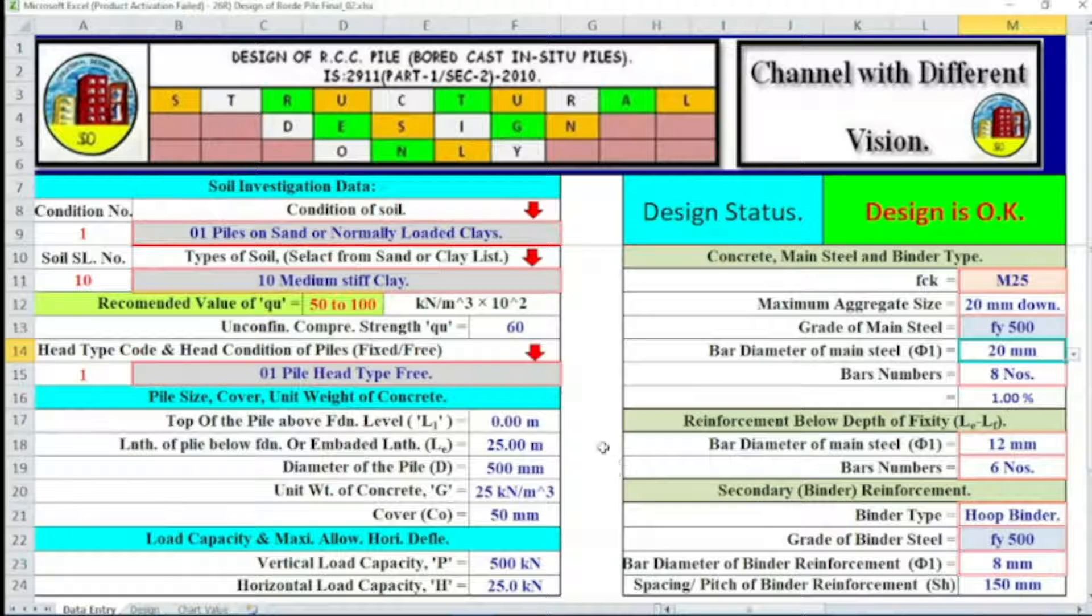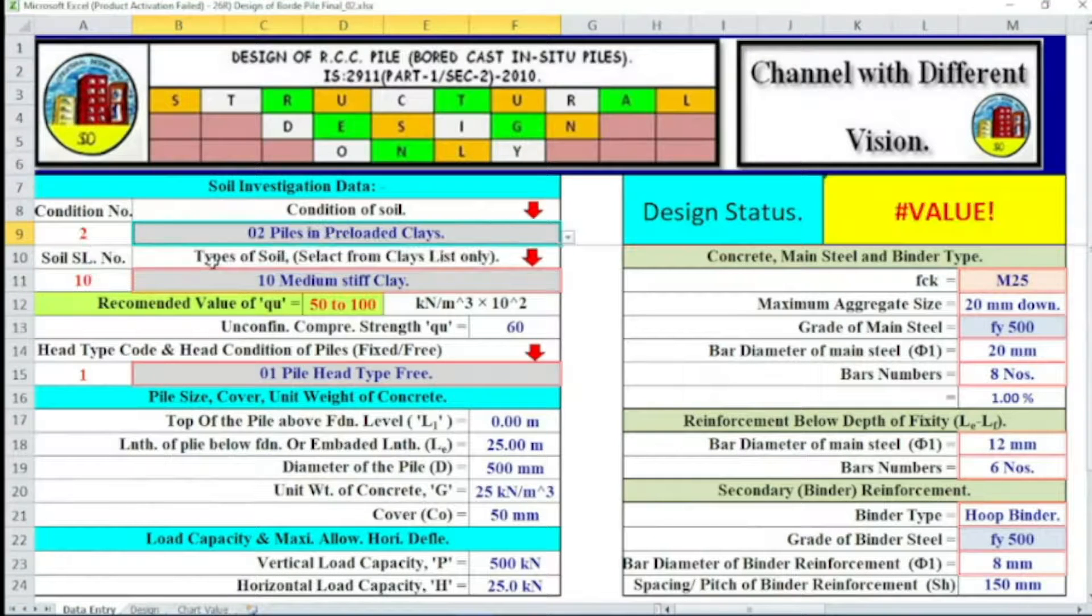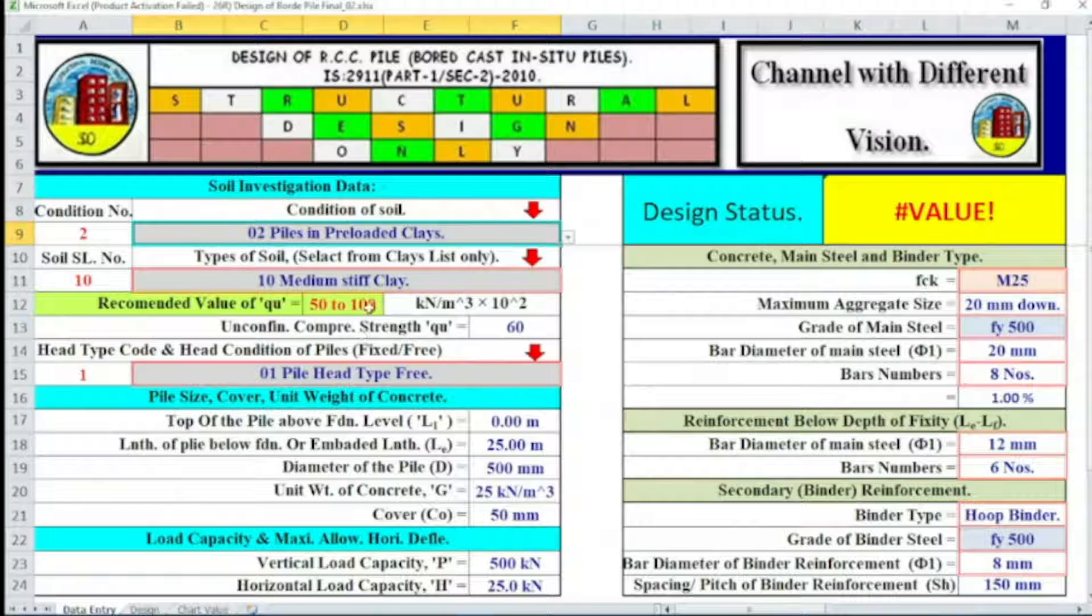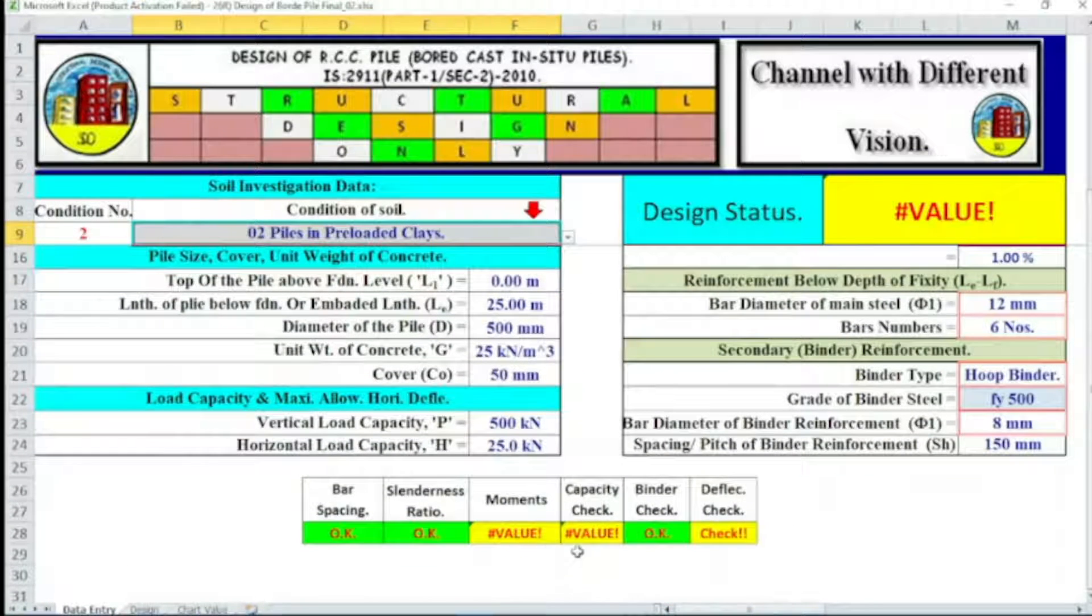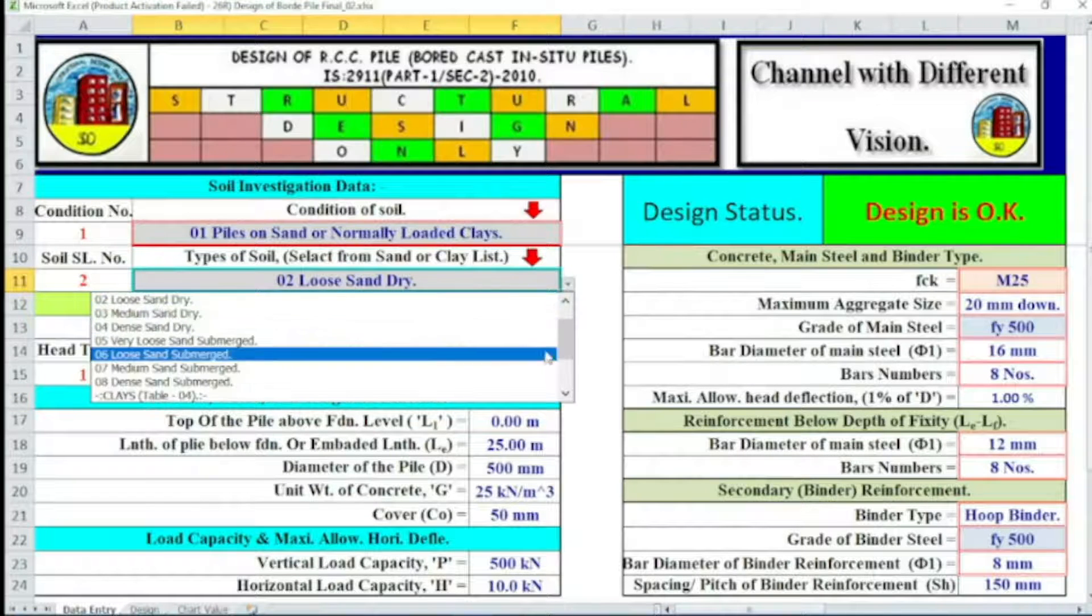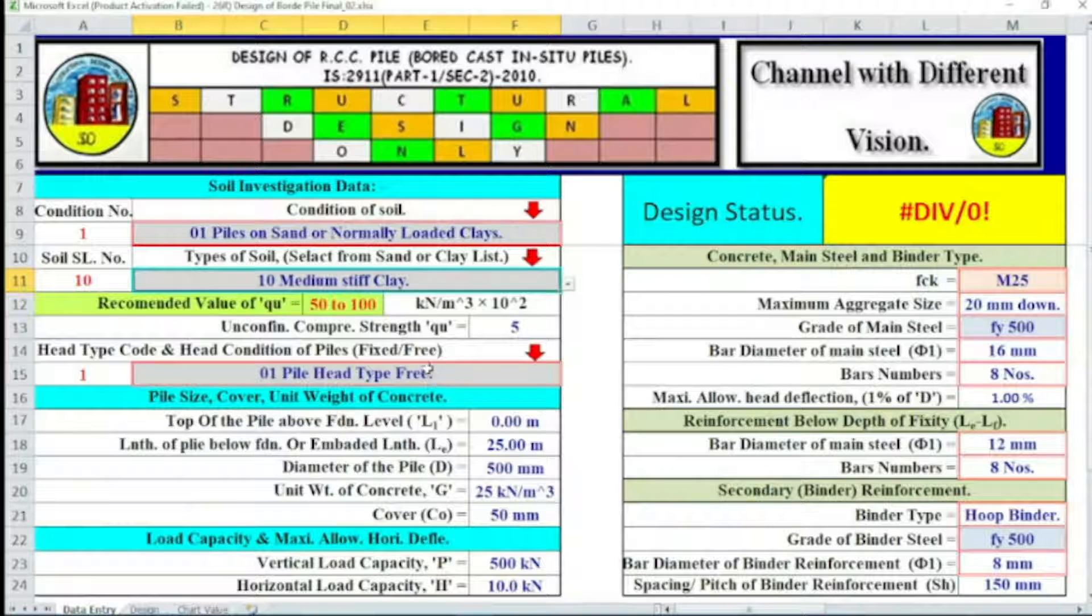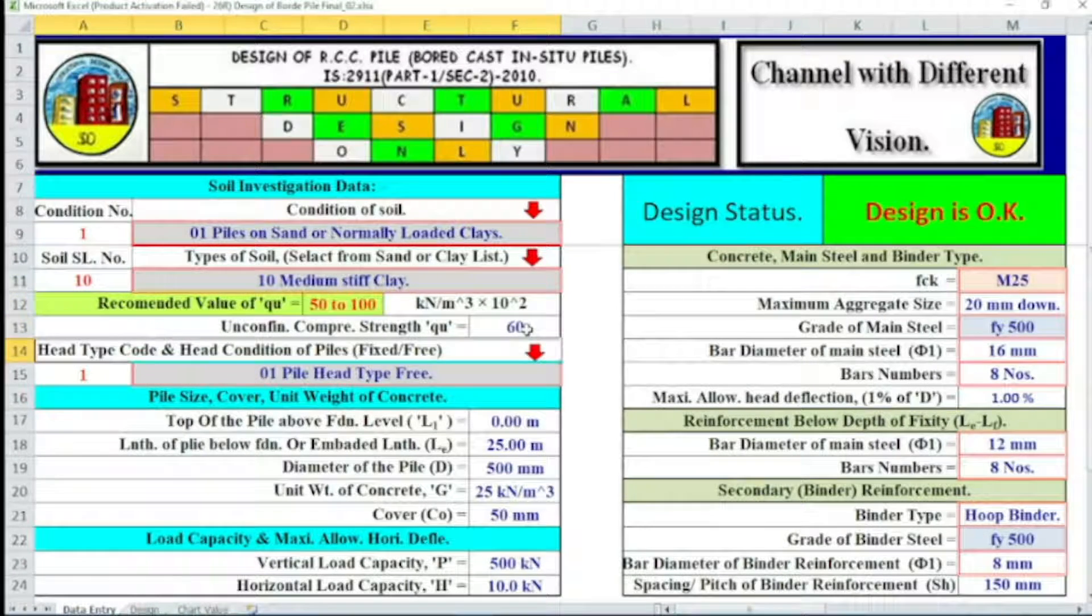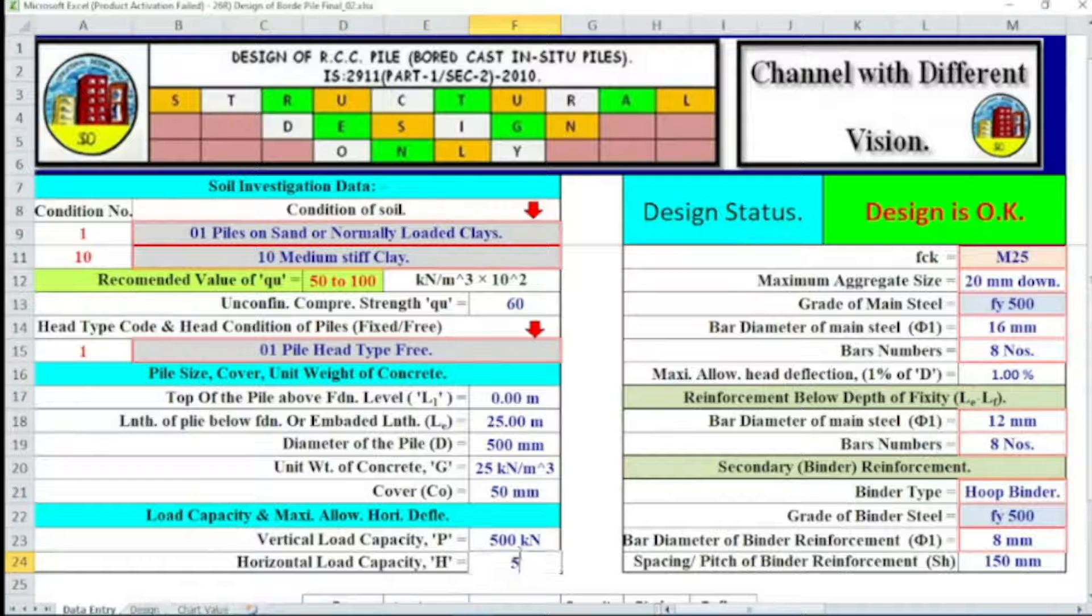In this way we can also change the type of pile. Pile in preloaded clay. The value should be 50 to 100. Design status, not valid. Moment is a part which is not okay. So now I'm changing from loose and dry to medium thick clay. We have to change the value of UU. Say it is 60. Design is okay.